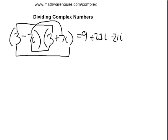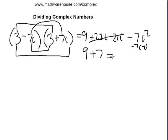The middle terms go away: 21i minus 21i is 0. We end up with 9 plus 7, because i squared becomes negative 1, and negative 7 times negative 1 is positive 7, giving us 16. The pattern is: square the real number and add it to the square of the coefficient before i.